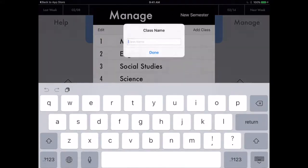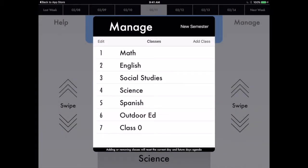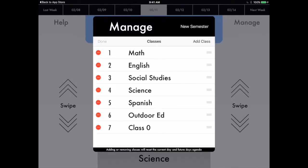If you need to add a class, you just click Add a Class and type it in. If you need to edit, change the order, or delete any of them completely, click on the Edit button. I'm going to delete this Class 0 because I don't actually have a Class 0.